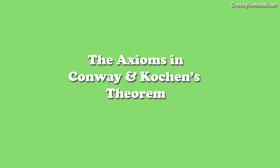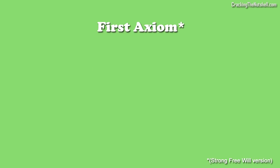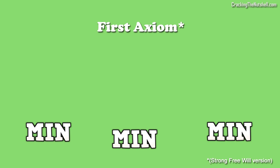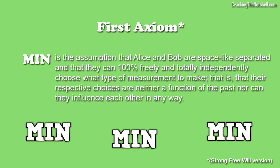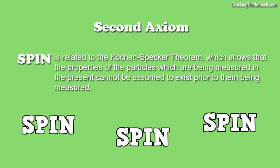This assumption is actually one of the axioms in Conway and Kochen's theorem. In their strong free will theorem version, they call this axiom MIN and it follows directly from Einstein's theory of relativity. MIN is the assumption that Alice and Bob are space-like separated and that they can 100% freely and totally independently choose what type of measurement to make — that is, their respective choices are neither a function of the past nor can they influence each other in any way. The second axiom in Conway-Kochen's theorem is called SPIN, and it is related to the Kochen-Specker theorem, which shows that the properties of the particles being measured in the present cannot be assumed to exist prior to them being measured. Therefore, the SPIN axiom follows directly from the foundations of quantum mechanics.